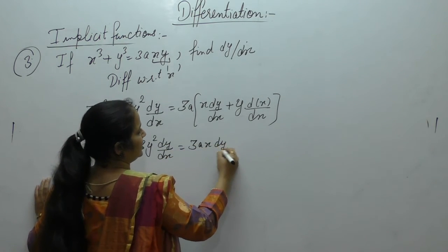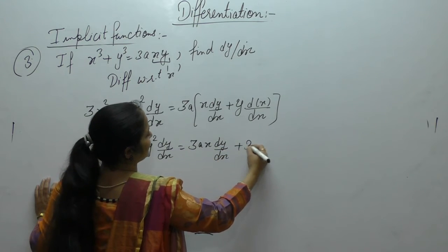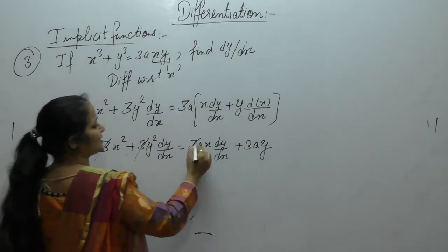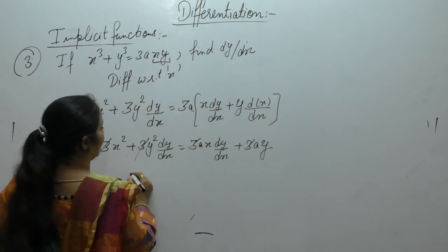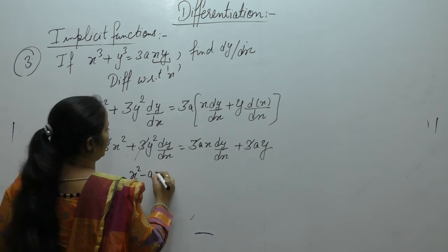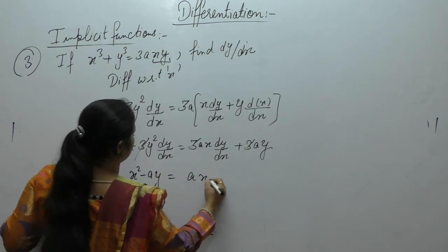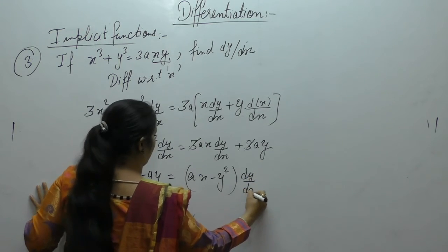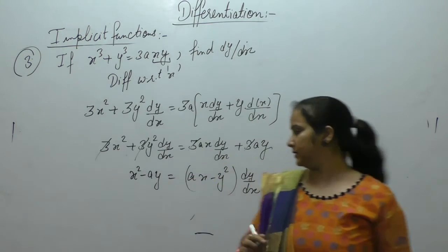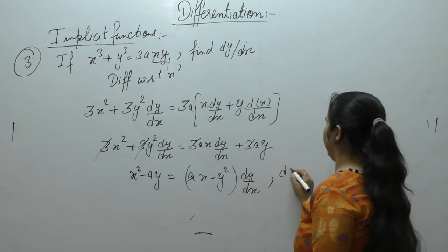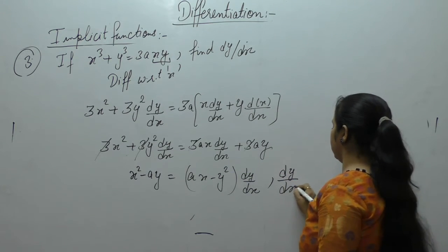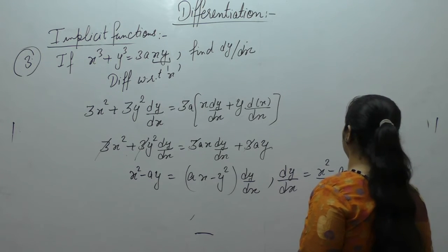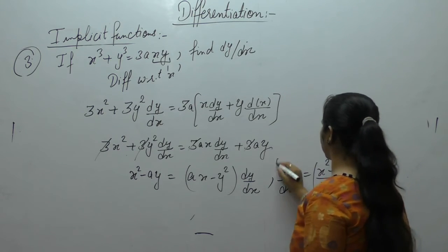3 will cancel from both sides. We are left with x² − ay = (ax − y²)·dy/dx. Therefore dy/dx = (x² − ay) / (ax − y²).